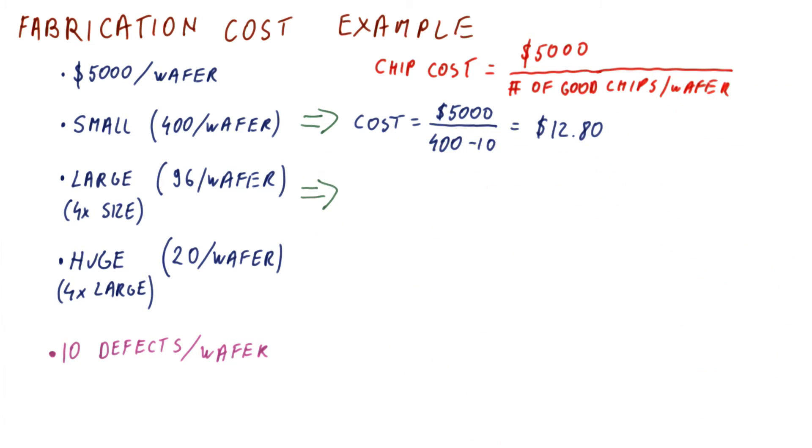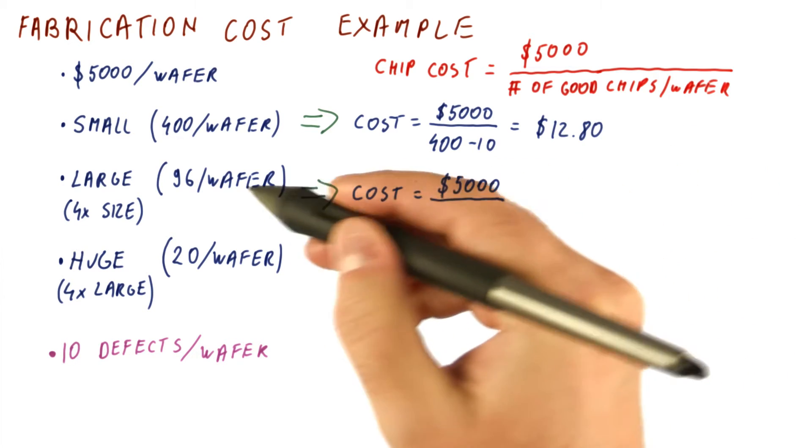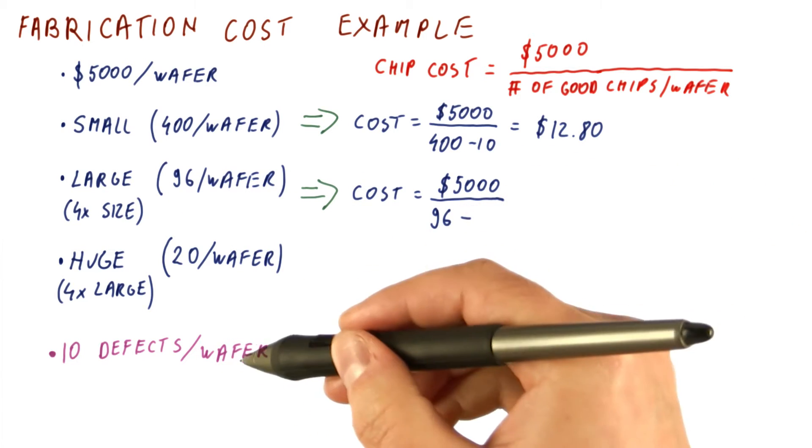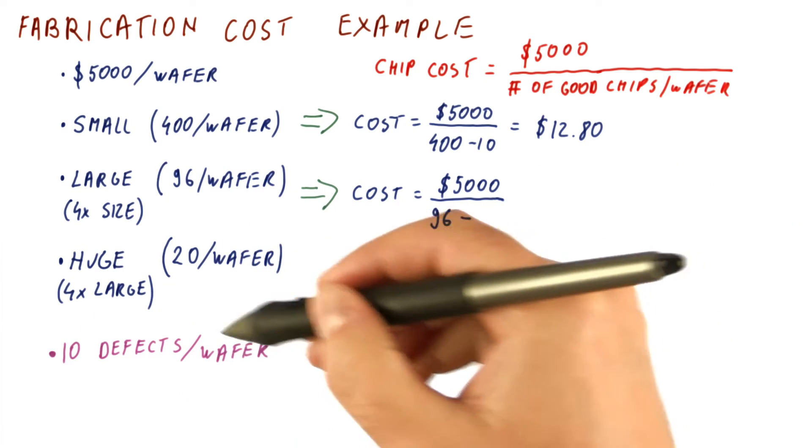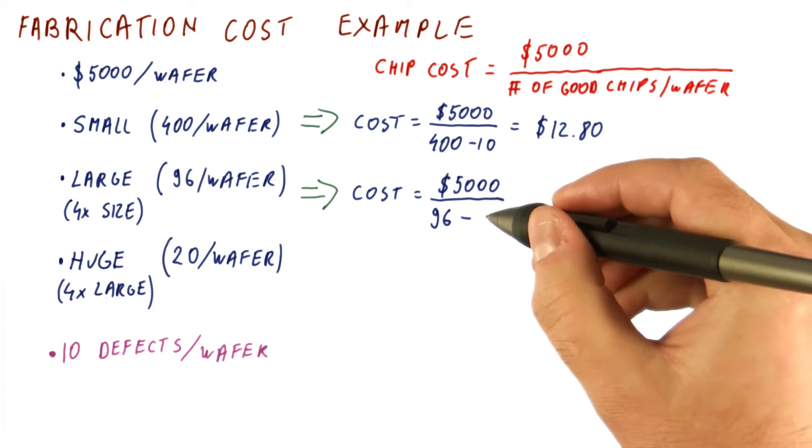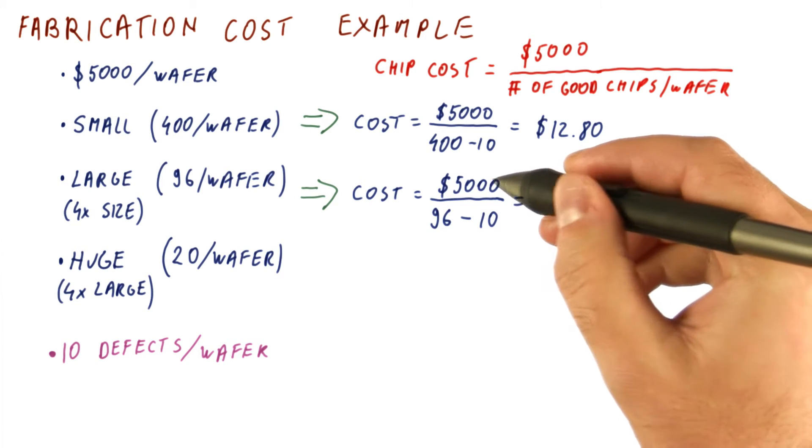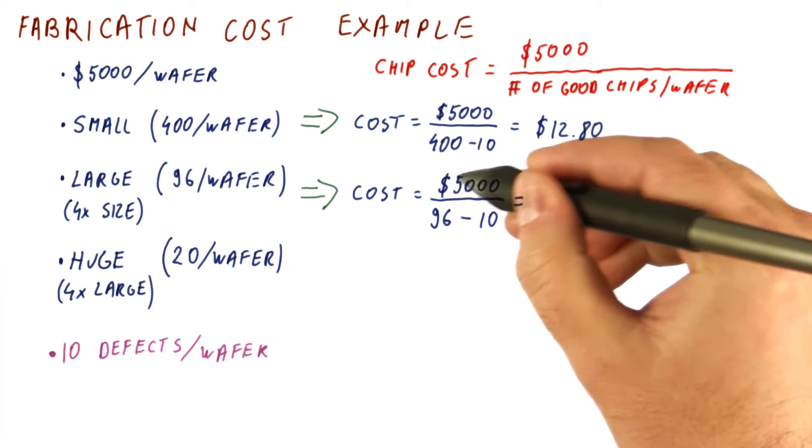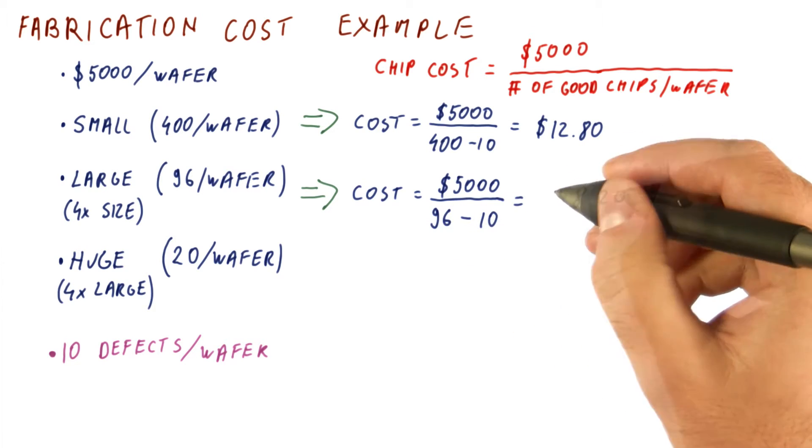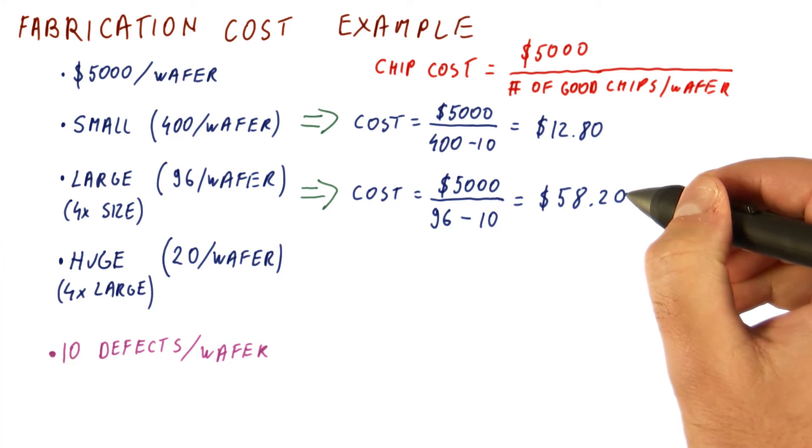For a large chip, we get the cost to be $5,000 divided by 96 of them fit on a chip. But again, these defects are going to be on the wafer and they will affect 10 of our chips, so we lose 10 to defects. So we end up with paying $5,000 for manufacturing and get only 86 working chips, so we get $58.20 as the cost of our chip.